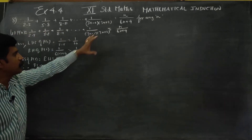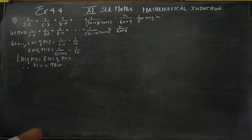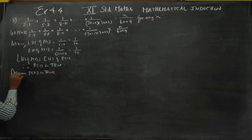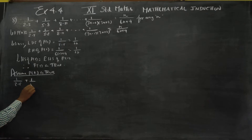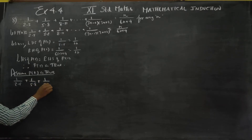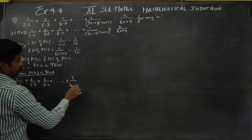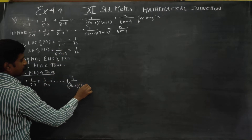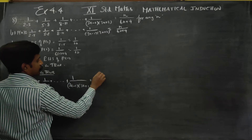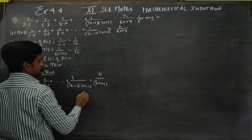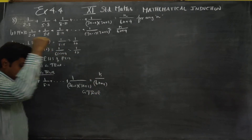P of 1 is true. That is stage 1, which is proved. Stage 2: Assume P of k is true. P of k is the same question with n equal to k — that is k by 6k plus 4 — is true.